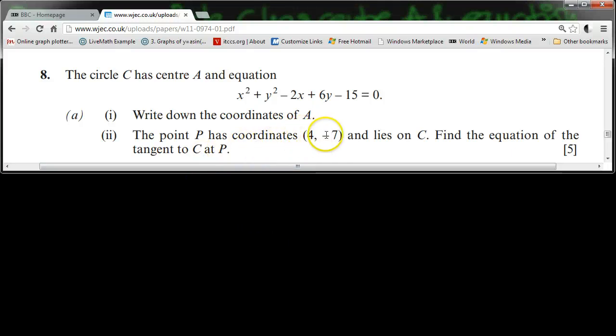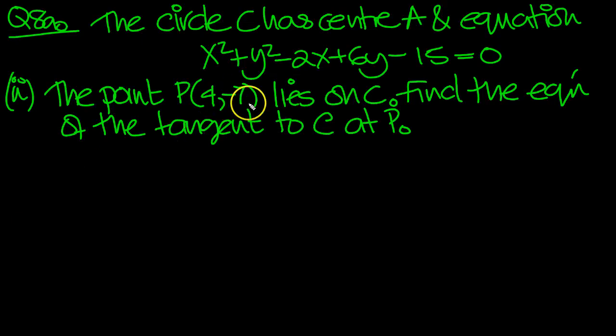The point P has coordinates (4, -7) and lies on C. Find the equation of the tangent to C at P. So that's what we need to do here.